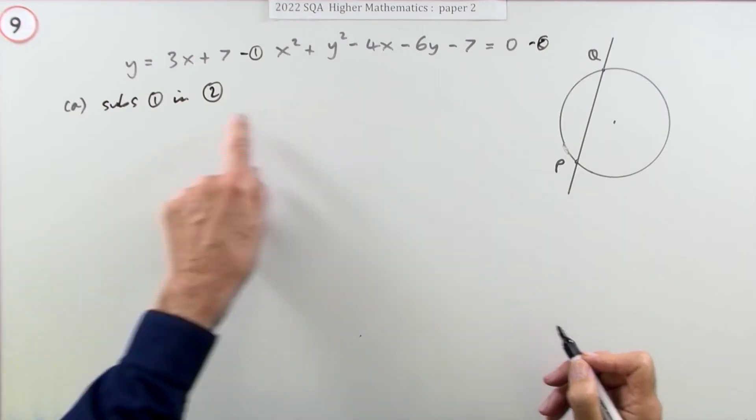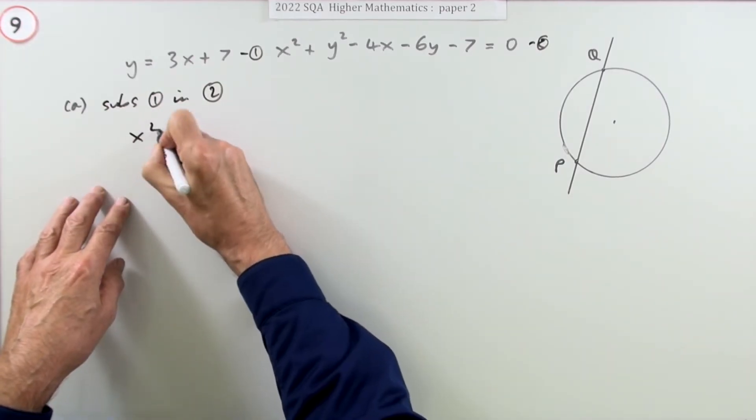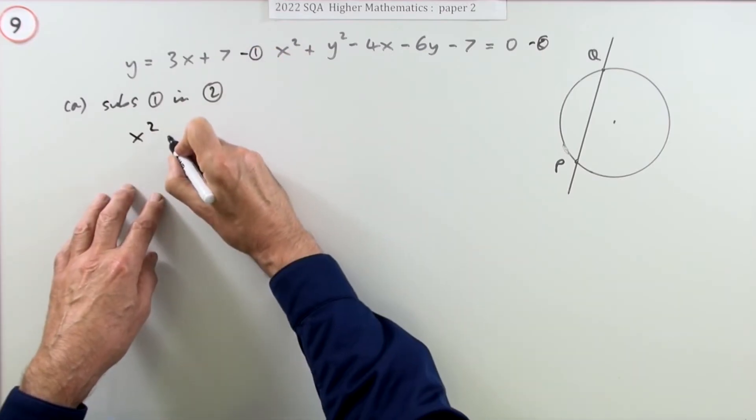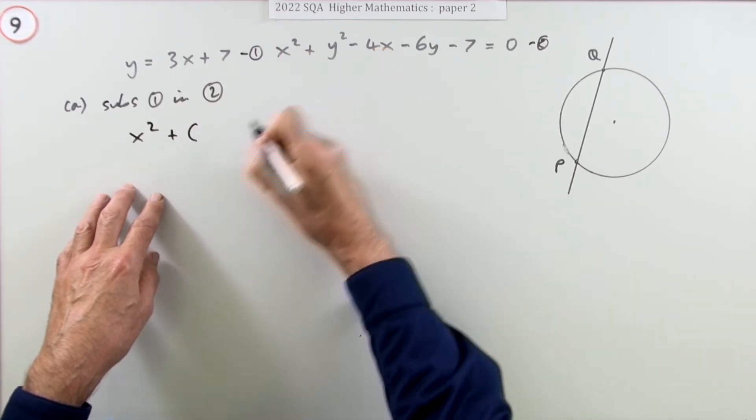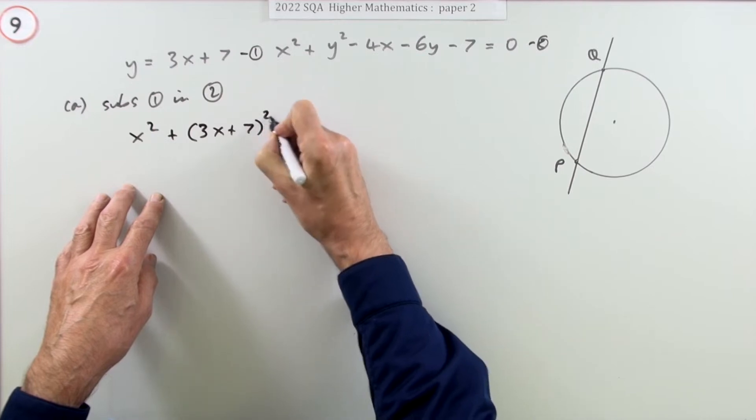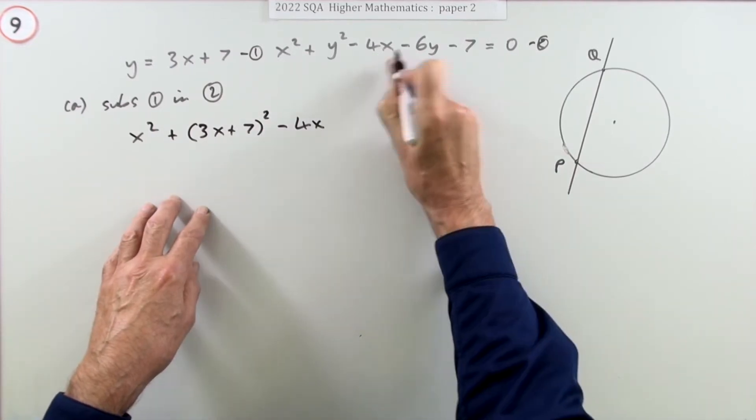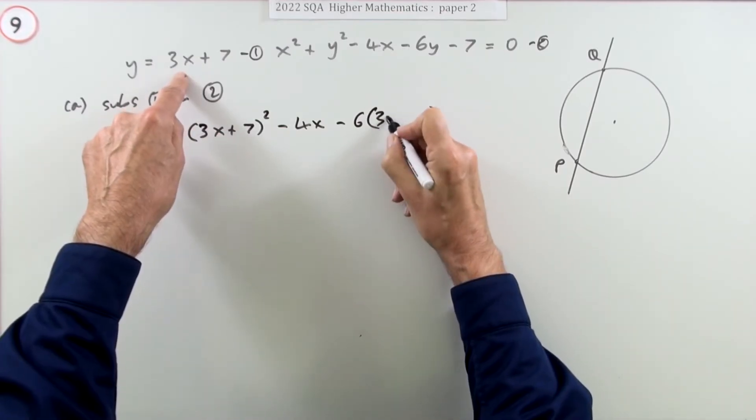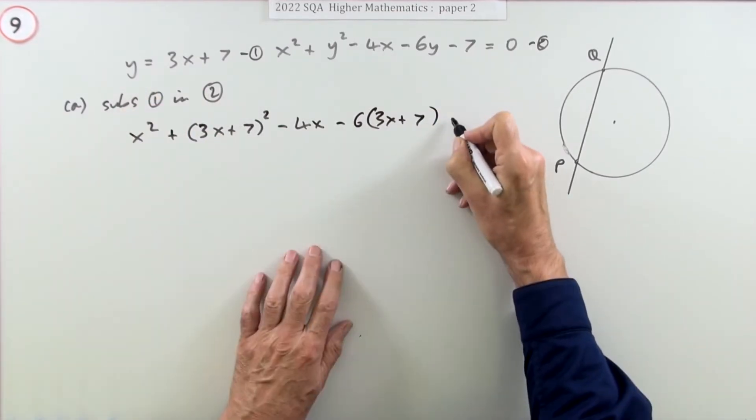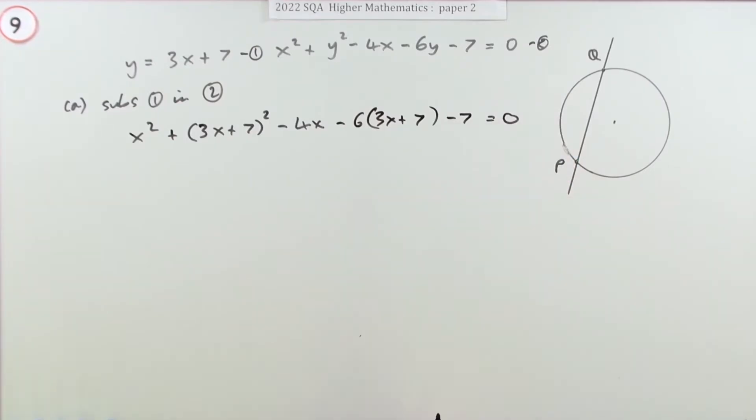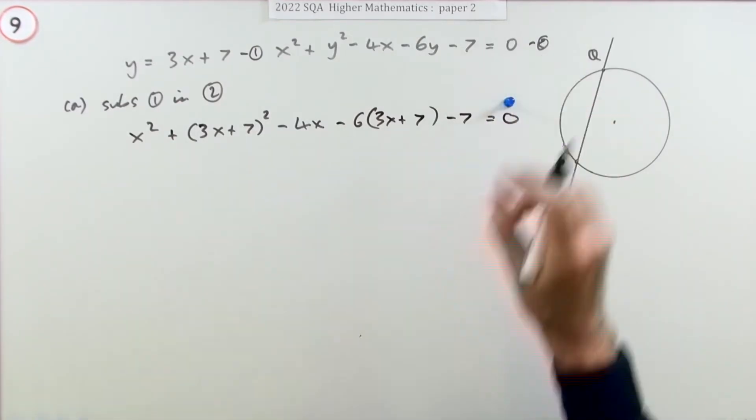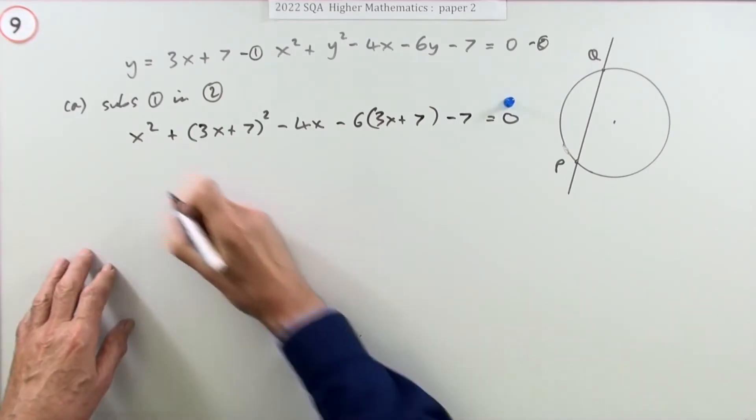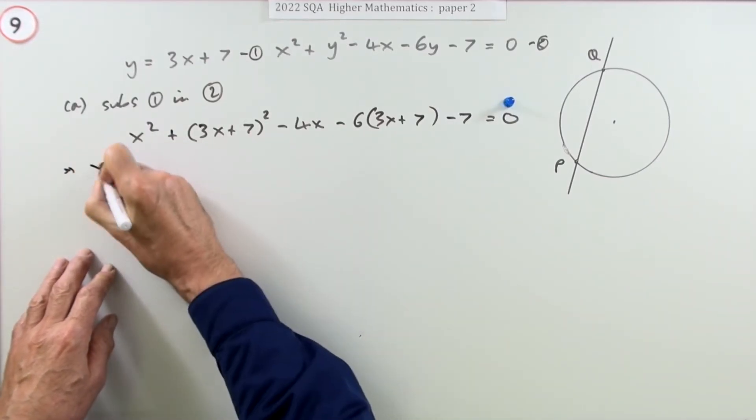In which case I just start writing out number 2, x squared. But wherever I come across a y, I use number 1 as a substitution. So y, 3x plus 7 squared minus 4x minus 6y, pop in 3x plus 7, minus 7 should equal 0. Now doing that, just substituting that in, gets the first mark. Now you've got to work it all out to get the next one.